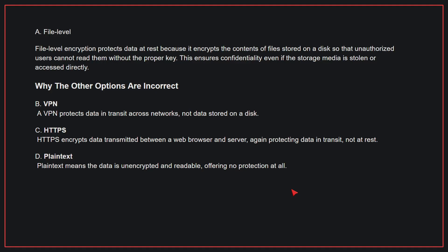Why the other options are incorrect: B, VPN — a VPN protects data in transit across networks, not data stored on a disk. C, HTTPS — HTTPS encrypts data transmitted between a web browser and server, protecting data in transit, not at rest. D, plain text — plain text means the data is unencrypted and readable, offering no protection at all. Therefore, the correct answer is A.